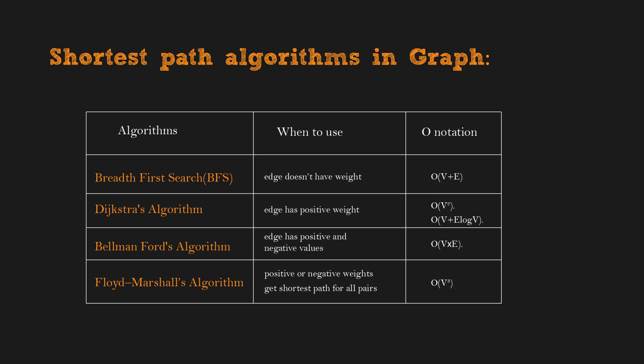There are many algorithms to solve shortest path in graph. Here are the major ones. Breadth first search. BFS searches its neighbors first, then moves on to search the neighbors' neighbors. Breadth first search can be used when edge doesn't have weight. The time complexity is O(V+E). V is the number of vertices, E is the number of edges.